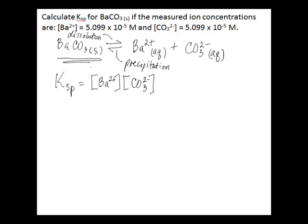This is your equilibrium equation. All you have to do is substitute in the concentrations that you're given to find the Ksp value. In this case, you say that Ksp equals 5.099 times 10 to the negative 5 moles per liter, which is the concentration of the barium cation, multiplied by that same number, which is also the concentration of the carbonate anion. When you solve and do the math here,